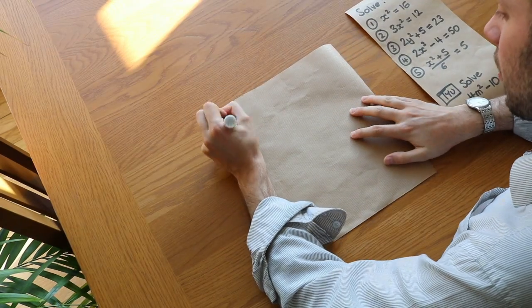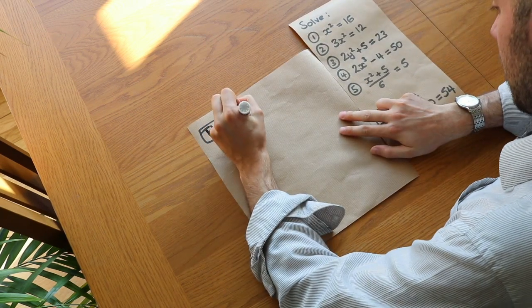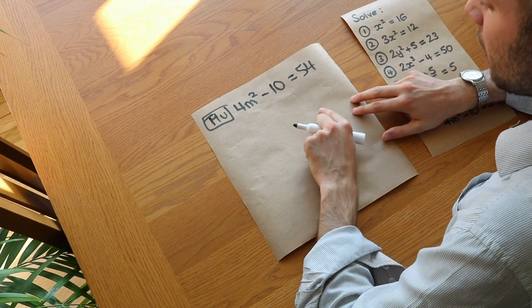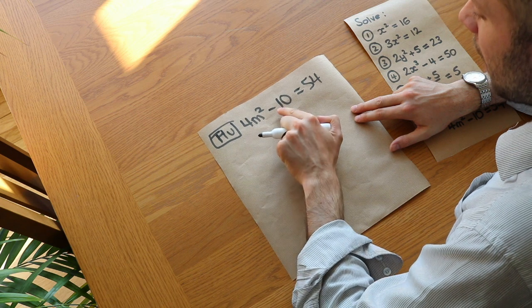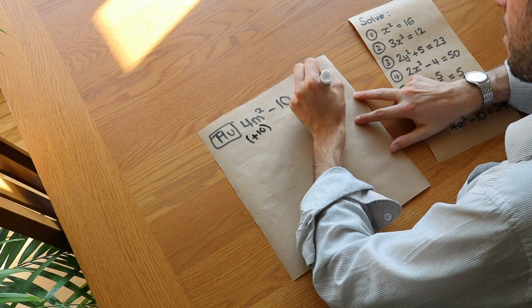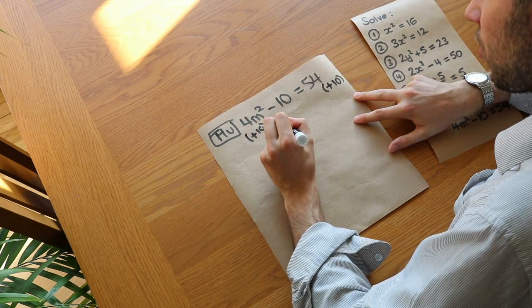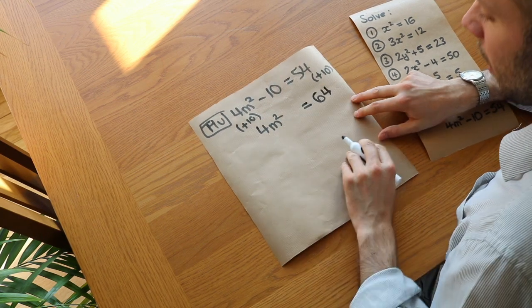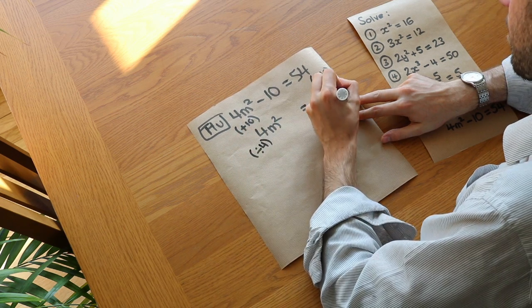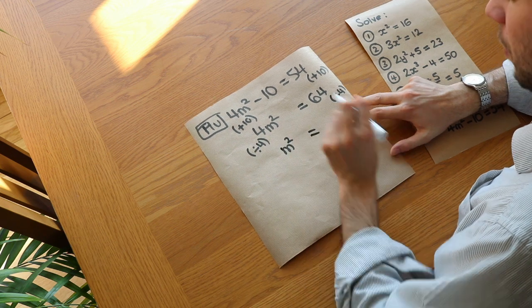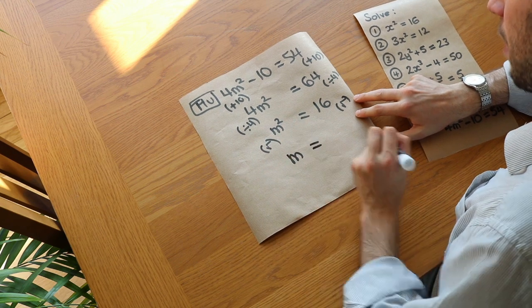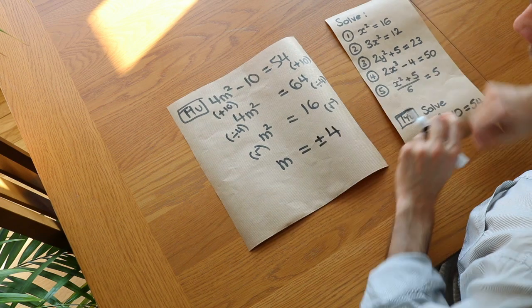Now for a test-your-understanding question: solve 4m squared minus 10 equals 54. m is squared, then multiplied by 4, then 10 is subtracted. Undo in reverse: add 10 to both sides to get 4m squared equals 64, then divide both sides by 4 to get m squared equals 16, then square root both sides to get m equals plus or minus 4. That is the final answer.